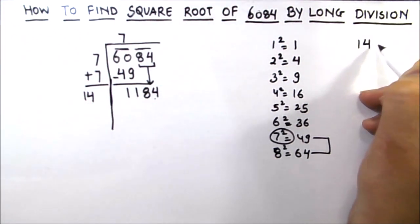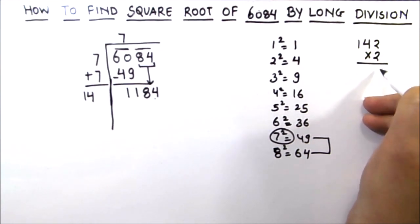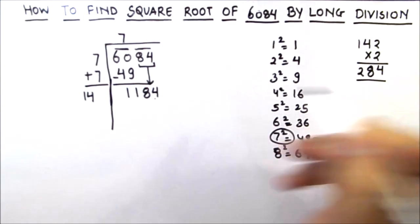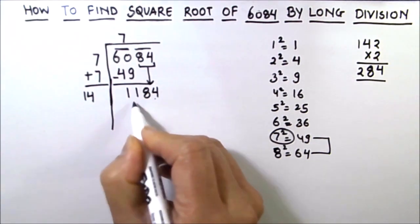So 14. Let's try 2. 142 times 2 is equal to 2 times 2 is 4, 2 times 4 is 8, and 2 times 1 is 2. 284 which is very less than 1184. So let's try a bigger digit here.